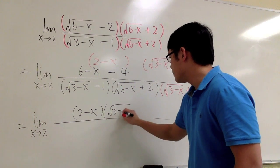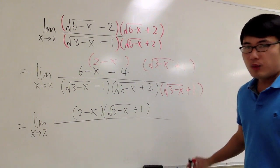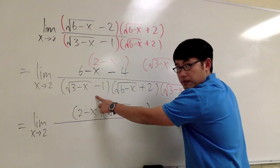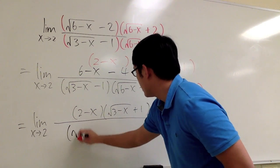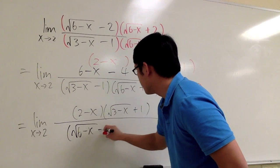2 minus x times square root of 3 minus x plus 1. And we are going to focus on this multiplication. If you would like, you can write this down first. I think I'll do that. Square root of 6 minus x plus 2.